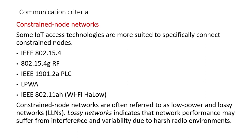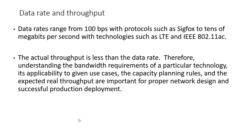Constrained node networks: some IoT access technologies are more suited for connecting constrained nodes, including IEEE 802.15.4, LPWA, and IEEE 802.11ah (Wi-Fi HaLow). These are often referred to as low-power and lossy networks (LLNs). Lossy networks indicate that network performance may suffer from interference and variability due to harsh radio environments, causing increased bit error rates.